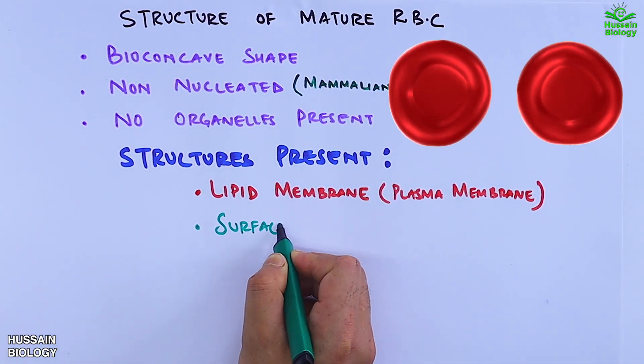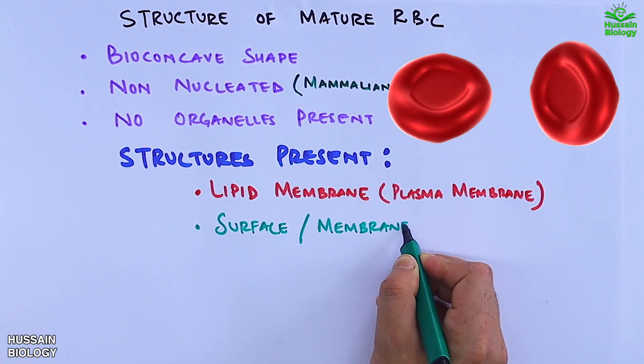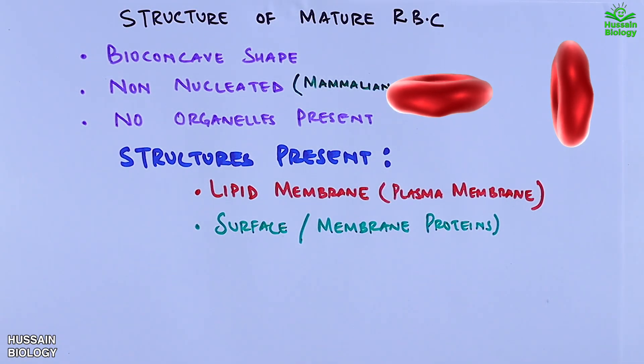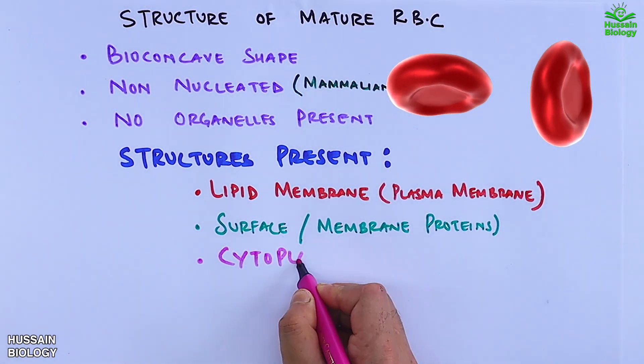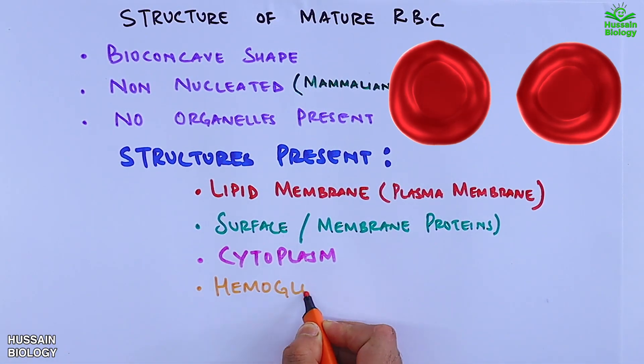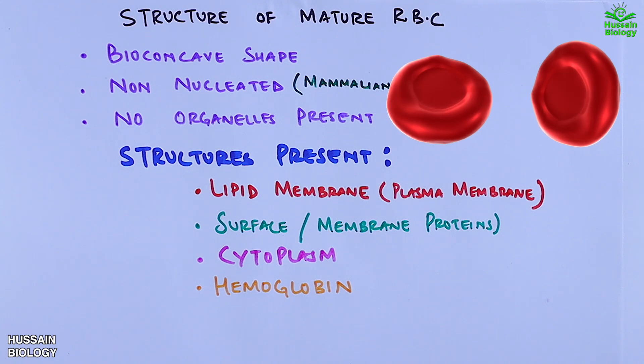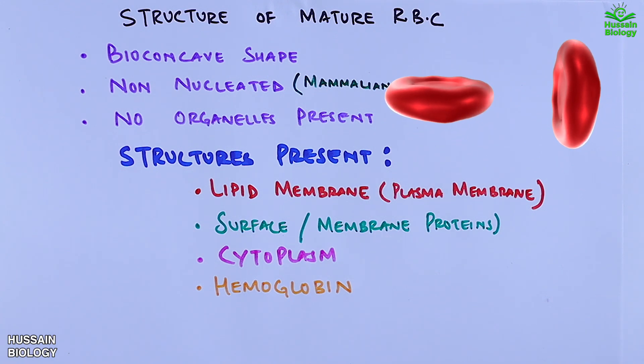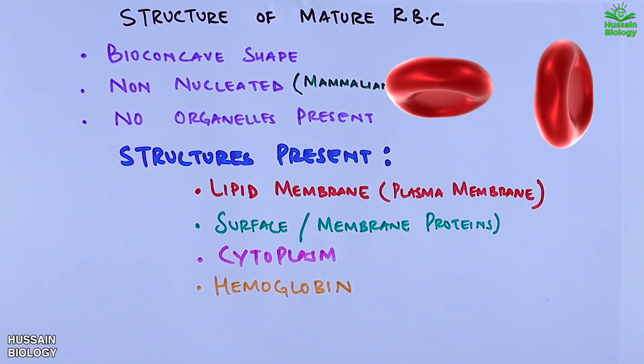The structures present in RBCs are: the lipid membrane, or plasma membrane; second, the surface or membrane proteins; third, the cytoplasm; and fourth, hemoglobin, which is one of the important proteins present in the erythrocytes.